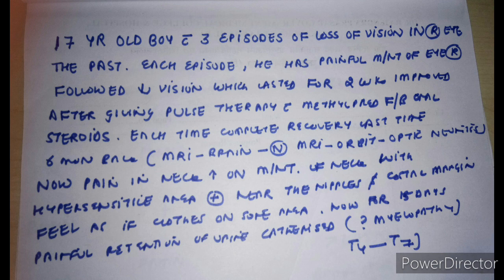How will you differentiate? Can it be MS? For MS, the patient has optic neuritis and spinal cord involvement, but there are no other brain lesions. His MRI brain was normal in spite of having three attacks of optic neuritis — no other lesions — which is very unlikely for MS.